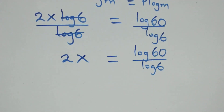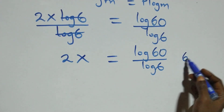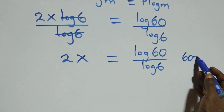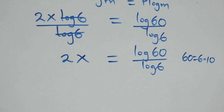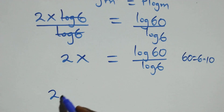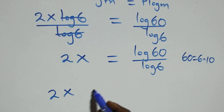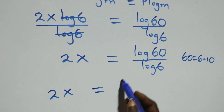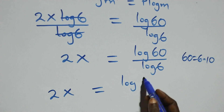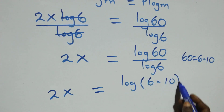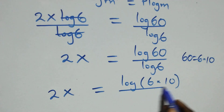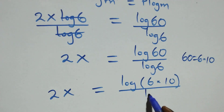Then from what we have here, we can express 60 as 6 times 10. This becomes 2x equals to log(6 times 10) over log 6.